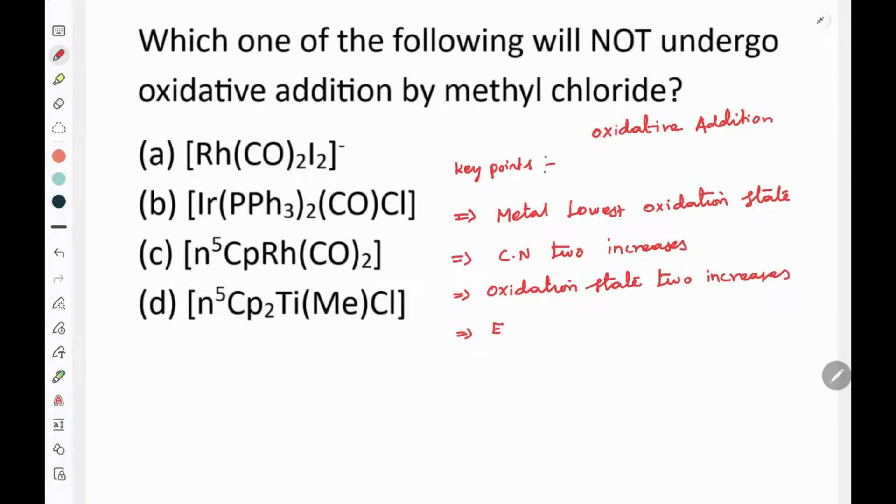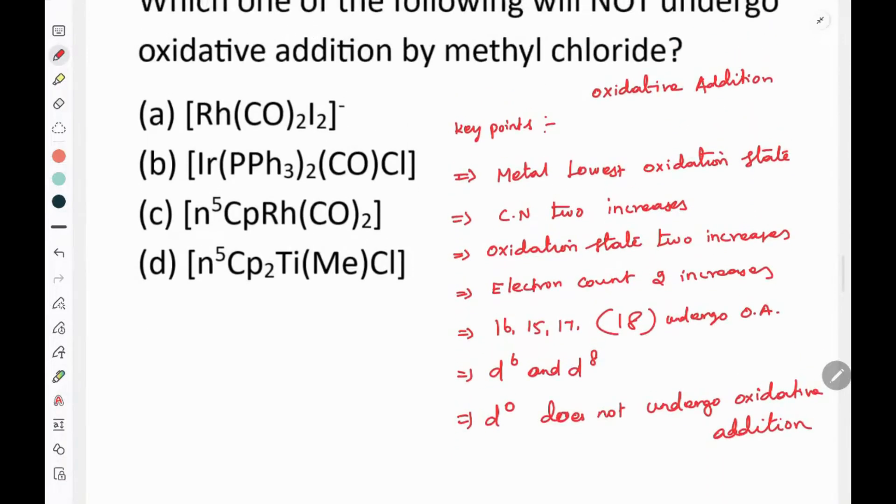The next key point is electron count. When it undergoes oxidation, if the electron count is d6 or d8, then d16 or d17 - these can undergo oxidative addition. But d0 and d8 do not undergo oxidative addition.